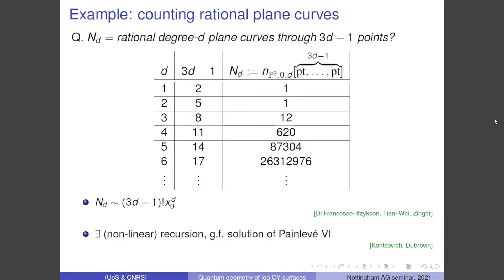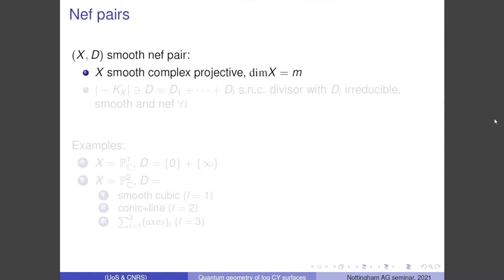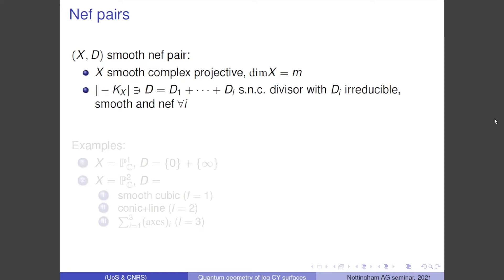This is already fairly exciting, but I would like to raise the stakes a little bit. Instead of looking at moduli spaces of maps to X alone, I would like to consider something sensitive not only to the geometry of X, but also to the geometry of a fixed divisor D in it. Throughout the rest of my talk, X will again be a smooth complex projective variety of dimension m, and D, as in my first slide, will be a singular anti-canonical divisor with simple normal crossing singularities, with each reduced component required to be smooth and NEF.